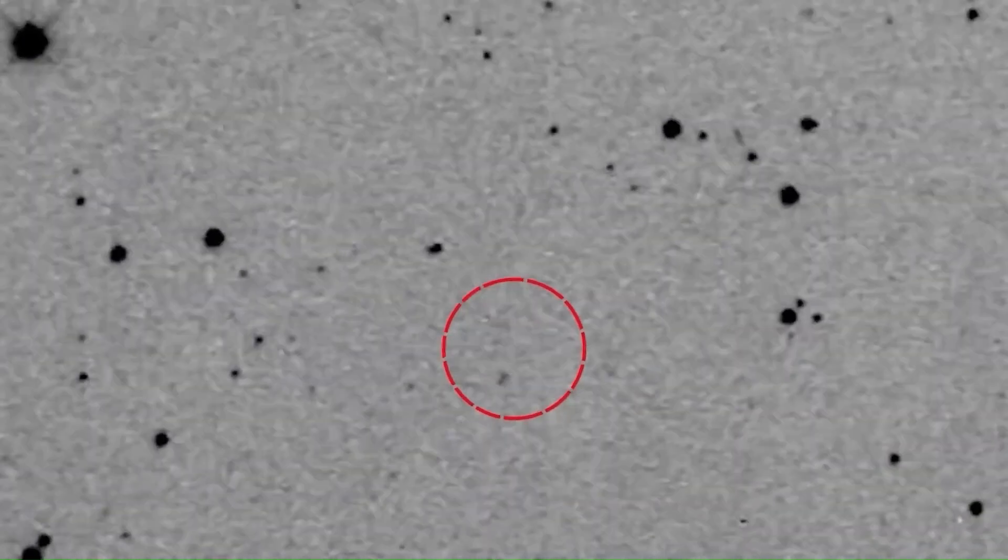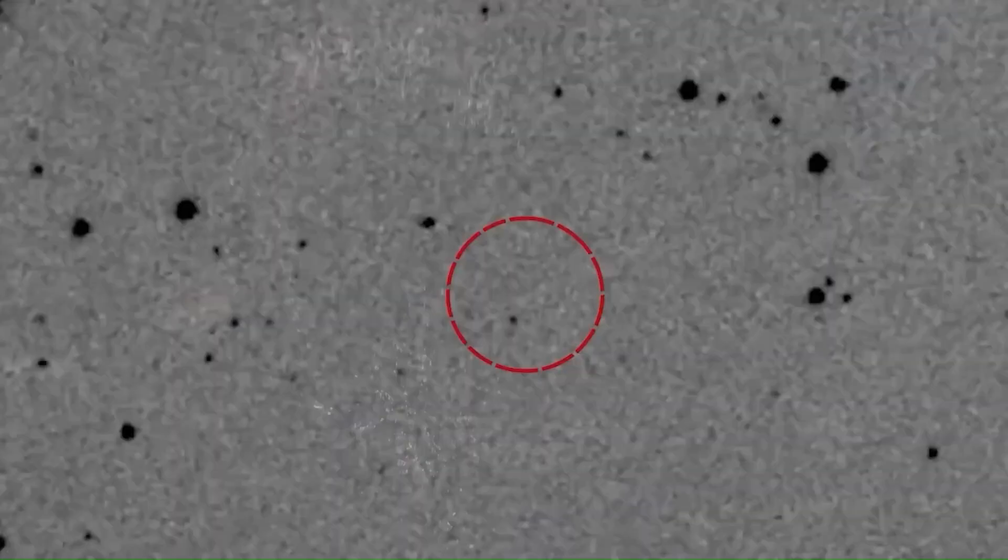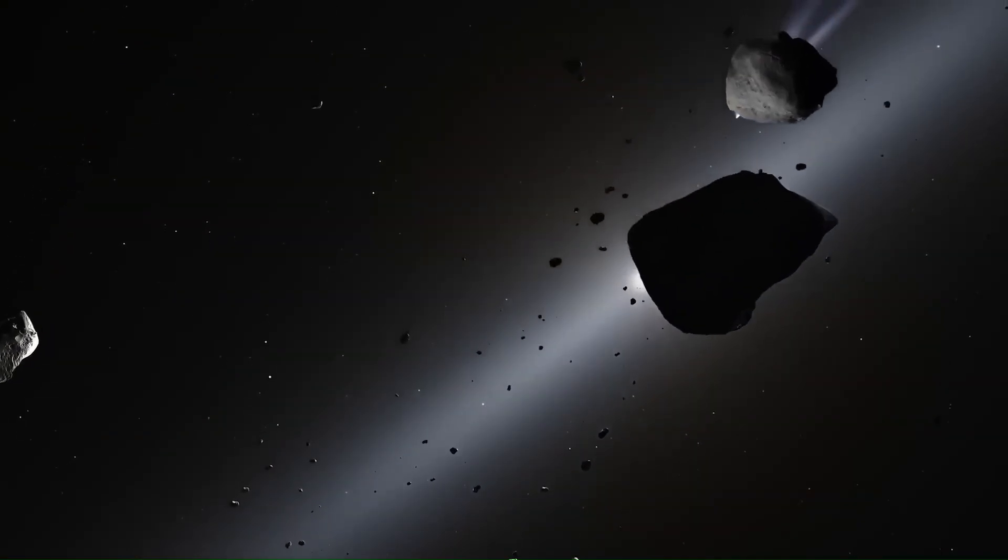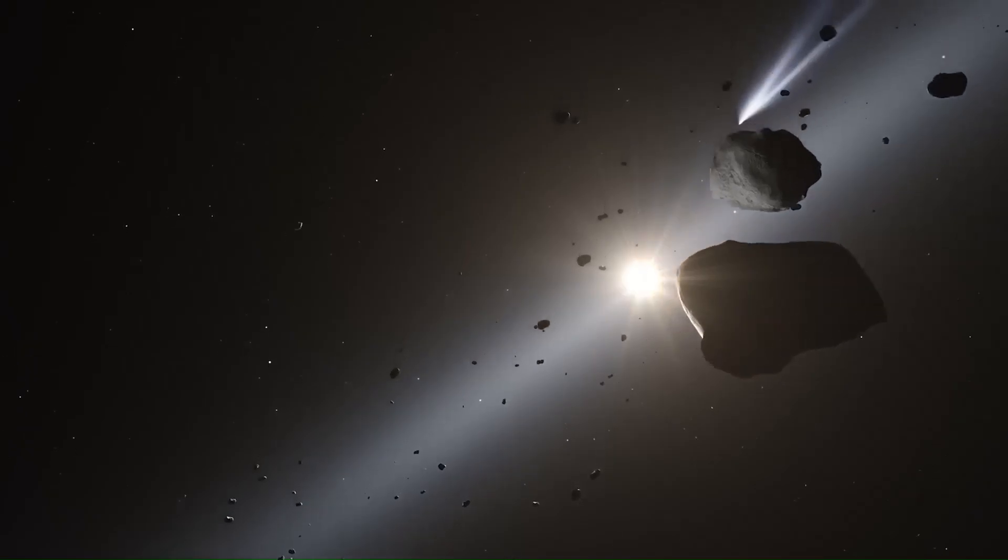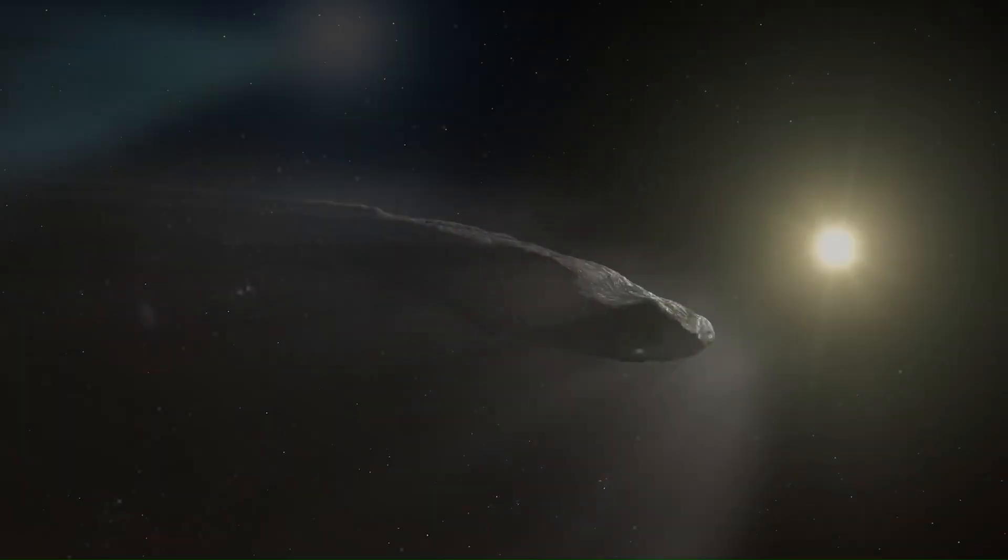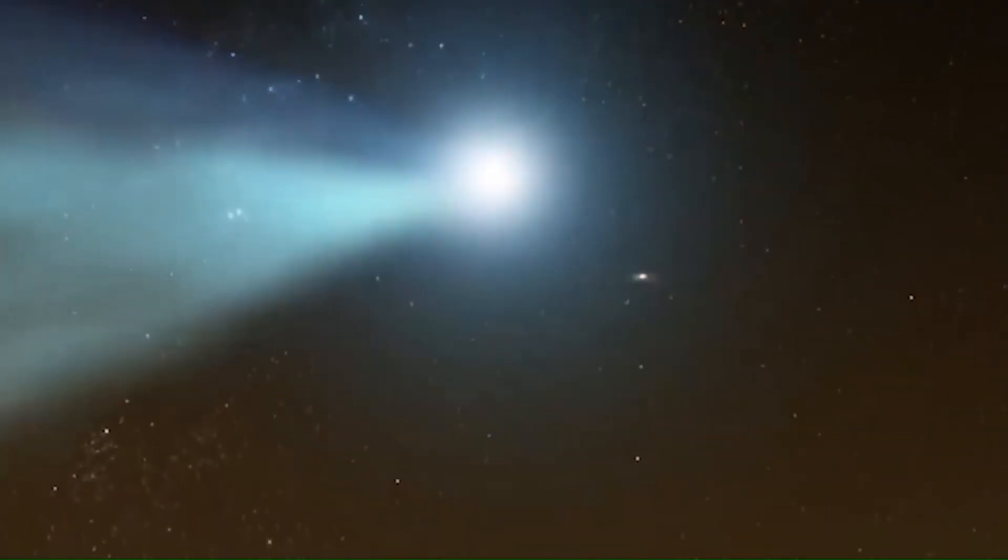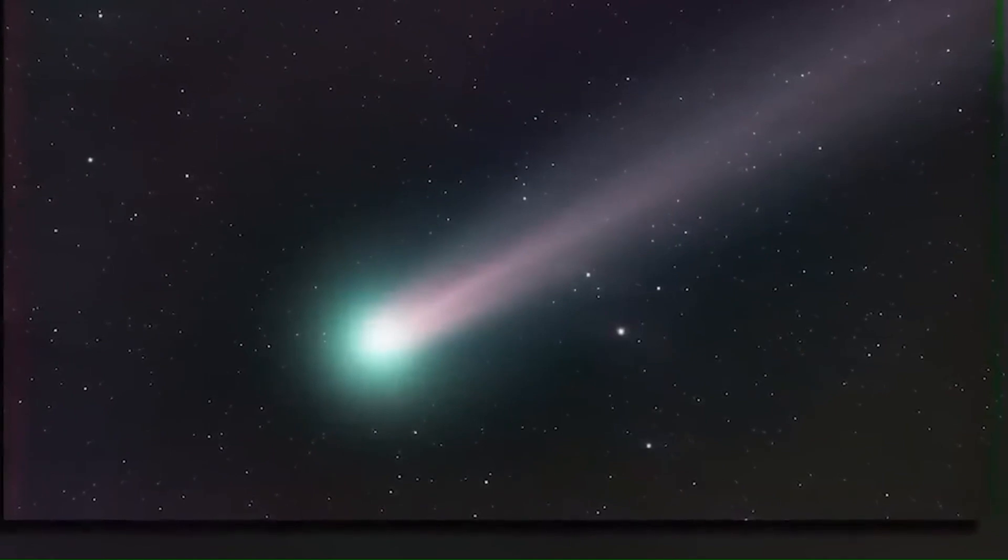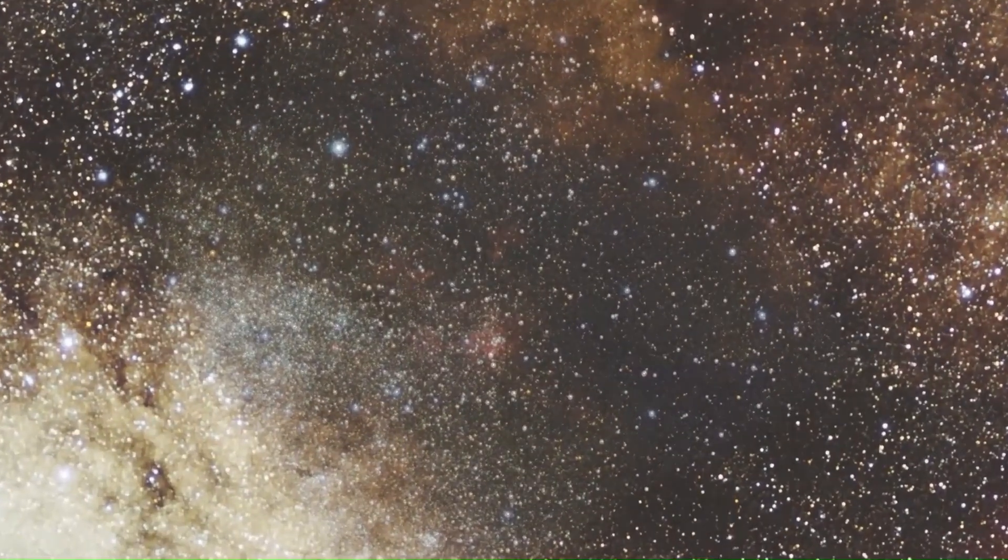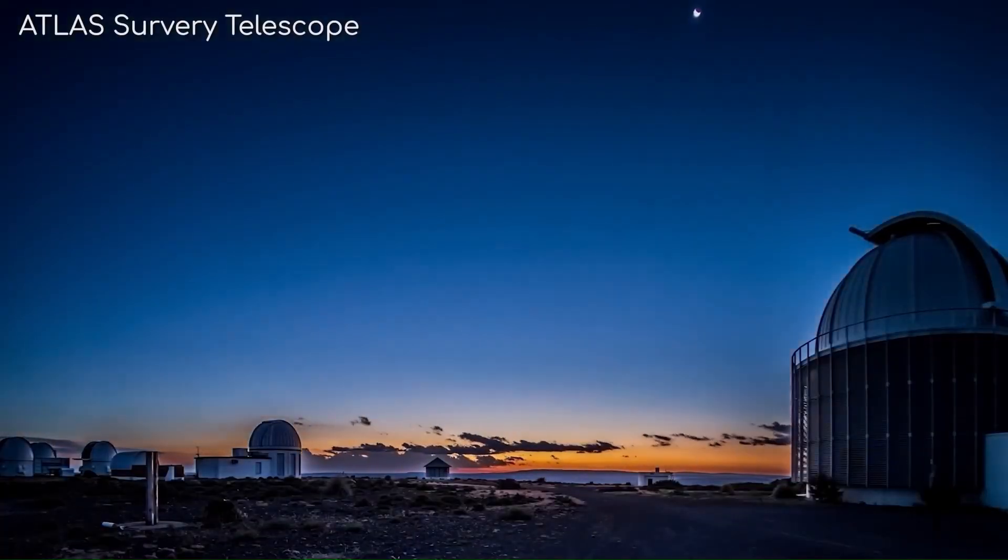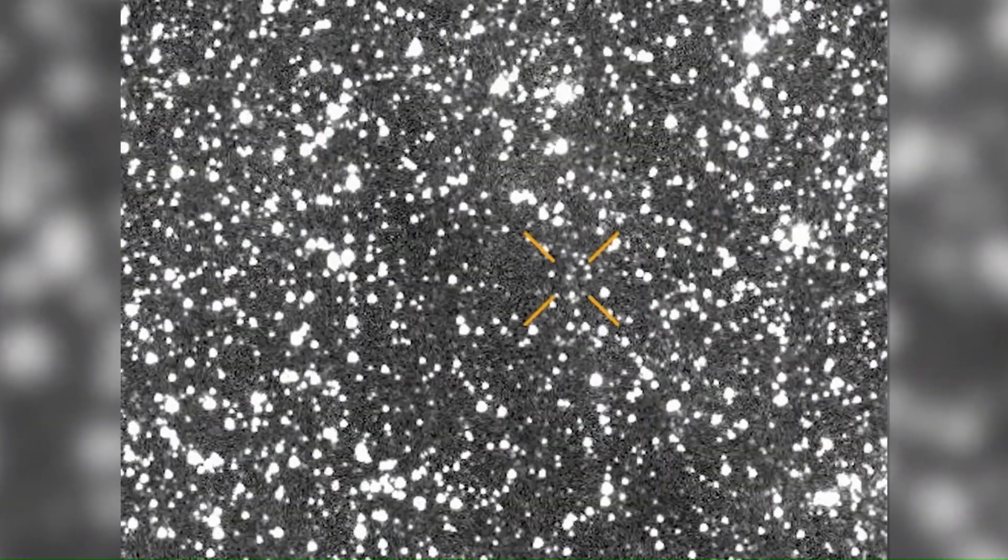When compared to 2I Borisov, the differences stand out even more. Borisov released large amounts of water and carbon monoxide, behaving exactly like a normal comet from another star system. 3I Atlas, in contrast, is bright and active, but lacks these typical chemical signals. Its forward halo, missing tail, and unusual dust behavior make it one of the most baffling objects astronomers have ever studied.